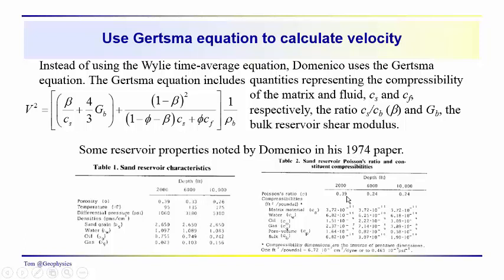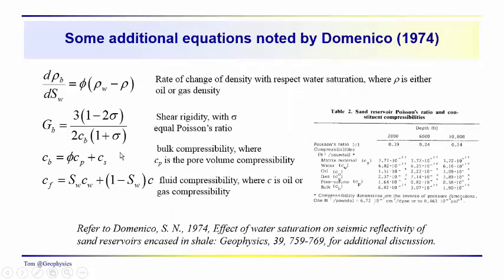We've got Poisson's ratio, 0.39 to 0.24. And it doesn't really seem to vary much between 6,000 and 10,000 feet. Drops significantly between 2,000 and 6,000 feet. We've got the various compressibilities here for reference and also the densities over here. So these are some additional relationships that are used in Domenico's 1974 paper.